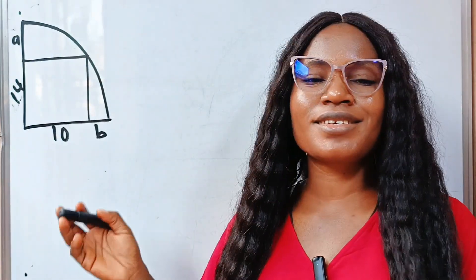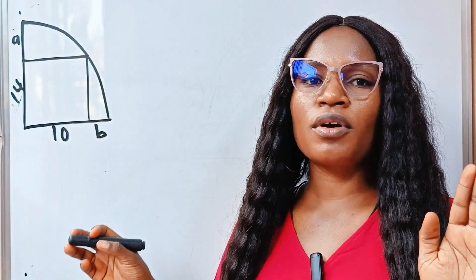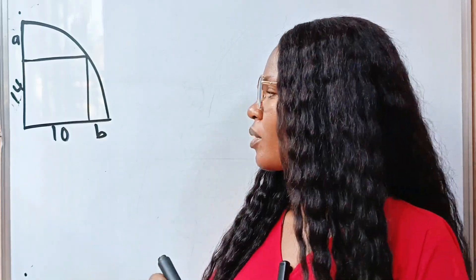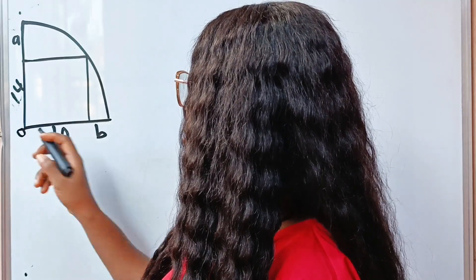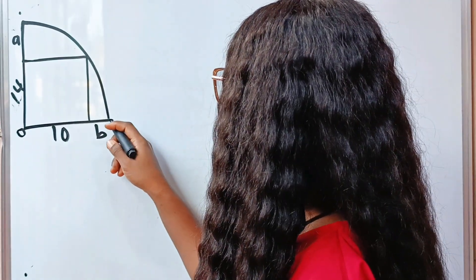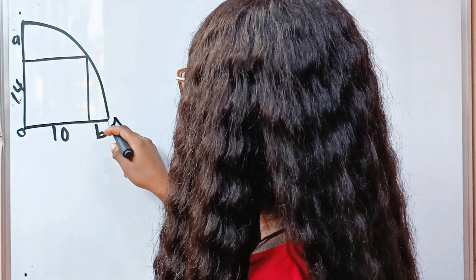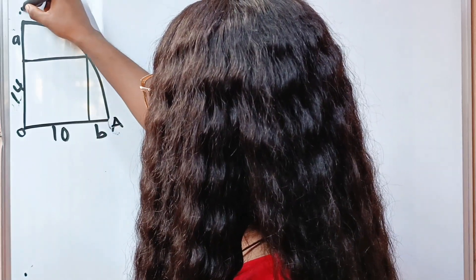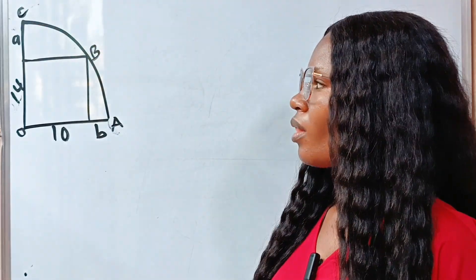This is a very simple geometry question, but if you don't know where to start from, you will definitely not get this right. So let's start by naming the points. This is the center of the circle, so it's O. Let's call this X, this place capital A, this place capital B, and this place capital C.